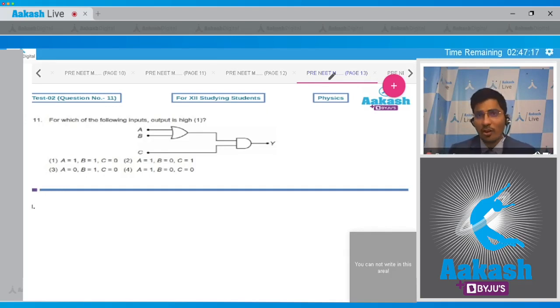Dear student, there is a shortcut to solve this question. As we can see here, this is an AND gate, and then in the AND gate the output will be 1 only if both inputs are equal to 1. Therefore we can clearly write that at least C should be equal to 1 for giving the output high, that is 1.